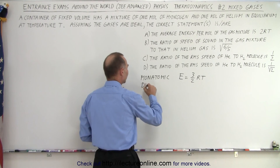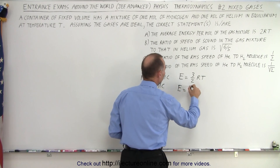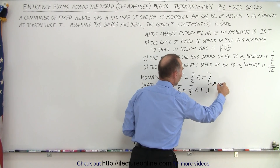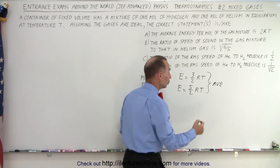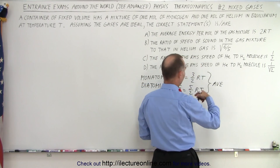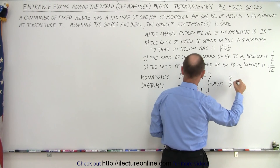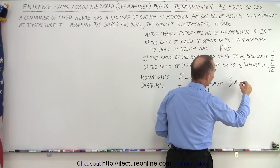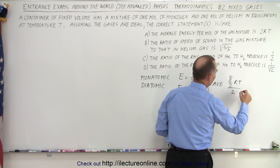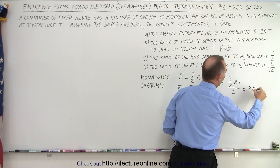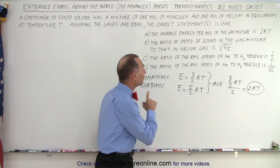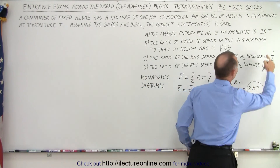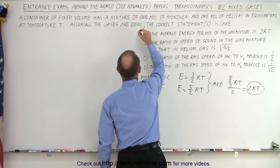For a diatomic gas, the energy is equal to (5/2)RT. When we take the average, we sum them together and divide by 2. That gives us (3/2 + 5/2)RT = (8/2)RT, divided by 2, which is (8/4)RT = 2RT. That is the average energy per mole for the two different kinds of gas — and this matches the value stated in A, so statement A is correct.